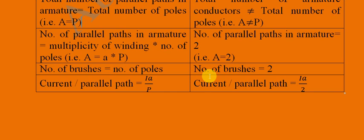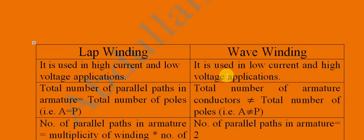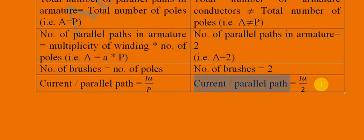In wave winding, the number of brushes is always 2, and the number of parallel paths in the armature is also 2. For current per parallel path: in lap winding it is Ia divided by P (armature current divided by number of poles), and in wave winding it is Ia divided by 2.